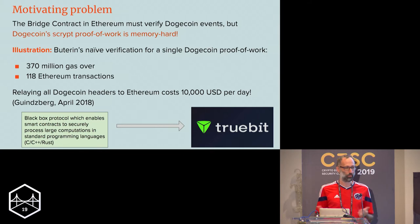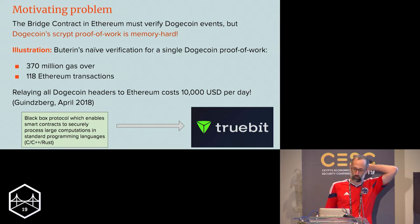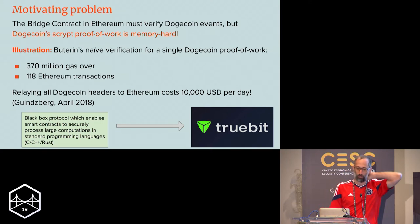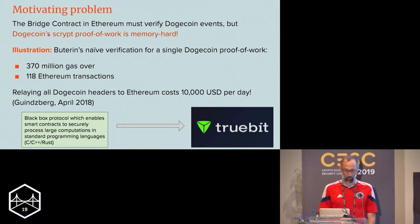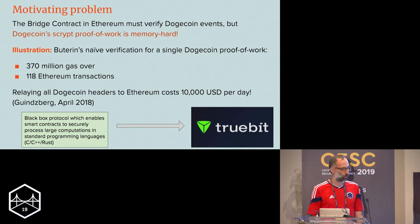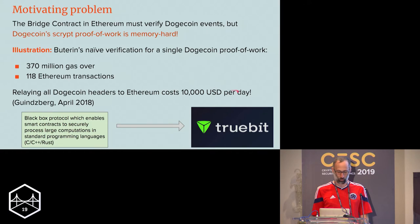To illustrate the hardness: Vitalik and Terra made a naive verification for a single Dogecoin proof of work, which was running 370 million gas over 118 Ethereum transactions. You also need to somehow communicate those Dogecoin headers into Ethereum. This was estimated at maybe $10,000 per day — maybe slightly cheaper now, but definitely not affordable.